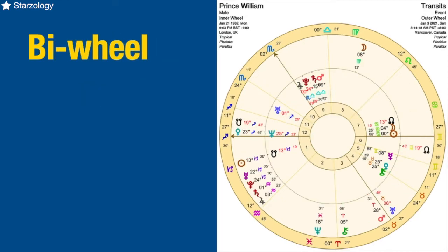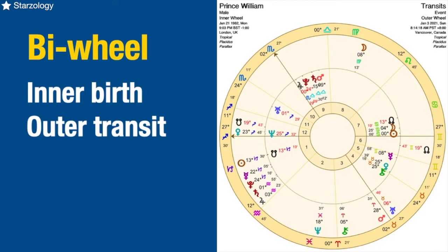Typically you would use a bi-wheel in astrology when you're working with transits. A bi-wheel means there are two wheels: the inner wheel will have the birth chart and the outer wheel will have the transit chart. If you look at the notes on the top left it says William's chart — that's his birth details, that is the inner wheel — and then the transit chart on the top right specifies that it is today's, January the 3rd, and that is the outer wheel. You always want to put the natal chart in the middle because the transits will pass over your natal planets and make the changes, implications and suggestions that transits do.